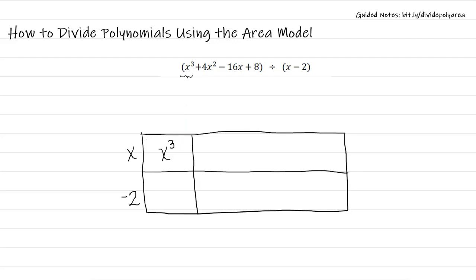I'm ready to begin dividing. And the way that I'm thinking about this is I have a length here that's x and a length here that's unknown. X times what value would give me x cubed? Well that would be x squared.